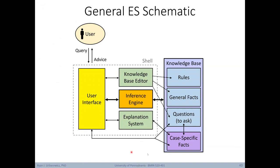Here's a more detailed schematic of a typical expert system. A user asks queries and gets back advice through a user interface. The user interface is connected to the inference engine, as well as a knowledge base editor and explanation system if available — all belonging to a reusable shell. The inference engine connects to the knowledge base, which is made up of rules, general facts, questions to ask the user, and a temporary memory space for case-specific facts added when investigating a specific user query.